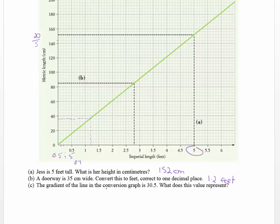The gradient of the line in the conversion graph is 30.5. What does this value represent? So this value represents the conversion rate between feet and metric length. So what it's really saying is that one foot is equal to 30.5 centimeters. So that's what it's representing.